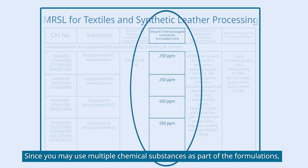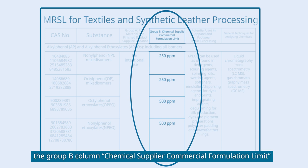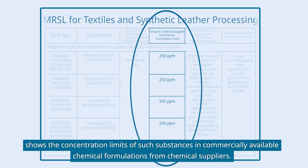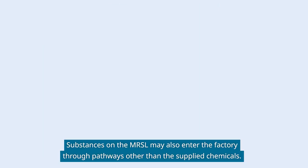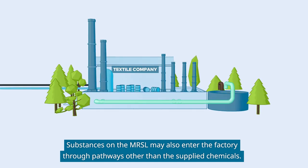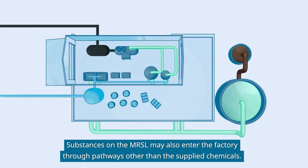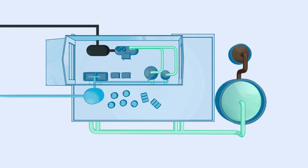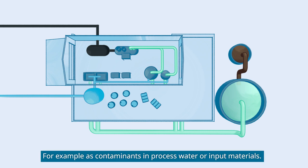Since you may use multiple chemical substances as part of the formulations, the Group B column — Chemical Supplier Commercial Formulation Limit — shows the concentration limits of such substances in commercially available chemical formulations from chemical suppliers. Substances on the MRSL may also enter the factory through pathways other than the supplied chemicals, for example as contaminants in process water or input materials.